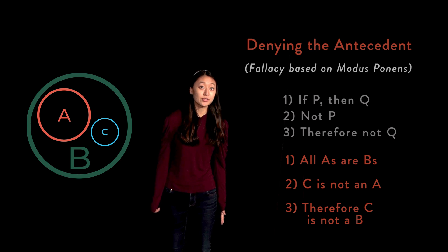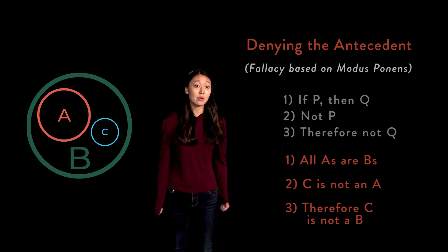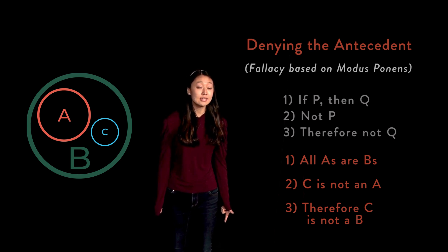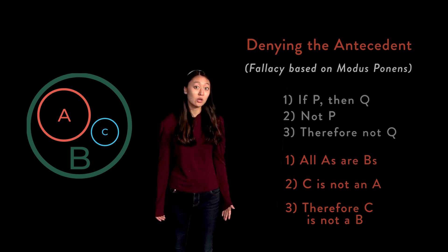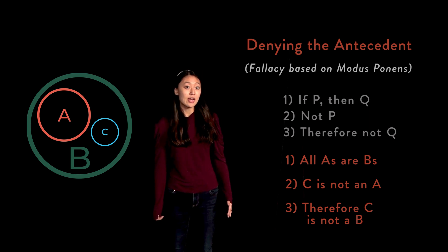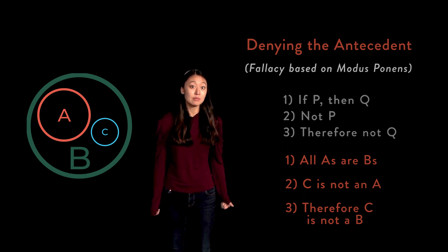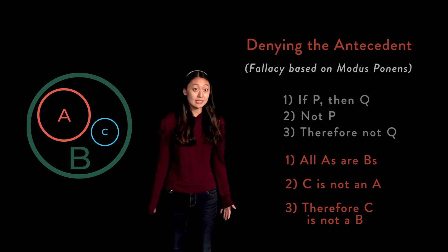This can easily be seen with the same Euler circles. This set of Euler circles shows both that 1. All A's are B's, and that 2. C is not an A. However, this is a case where both 1 and 2 are the case while 3 is not the case — that is, C is a B. Therefore, denying the antecedent is fallacious.